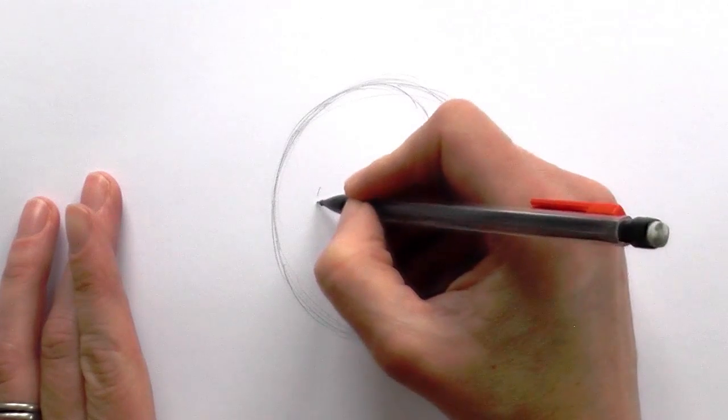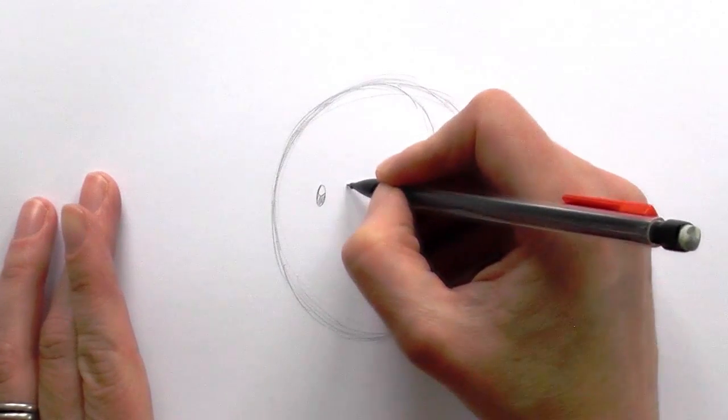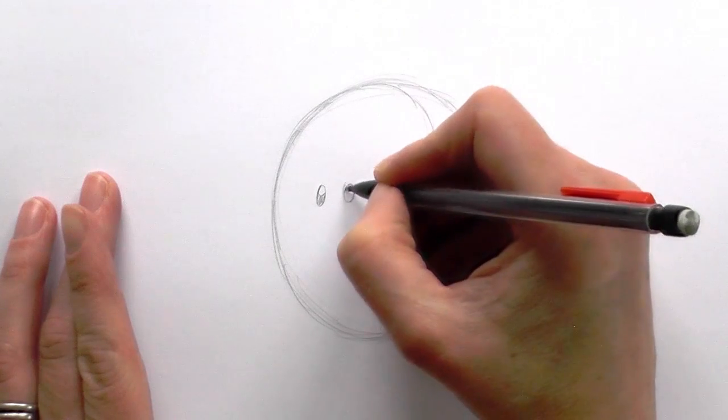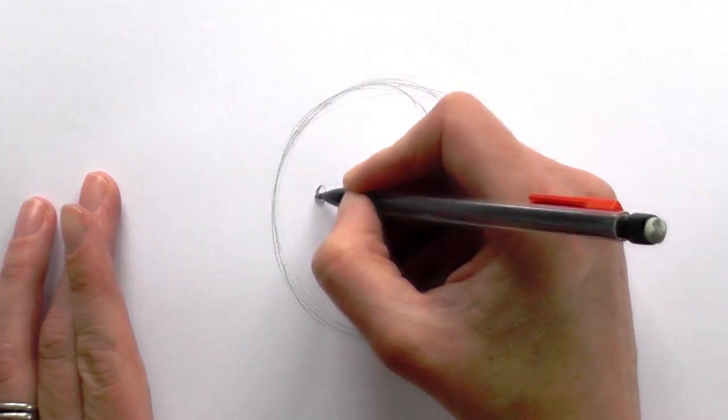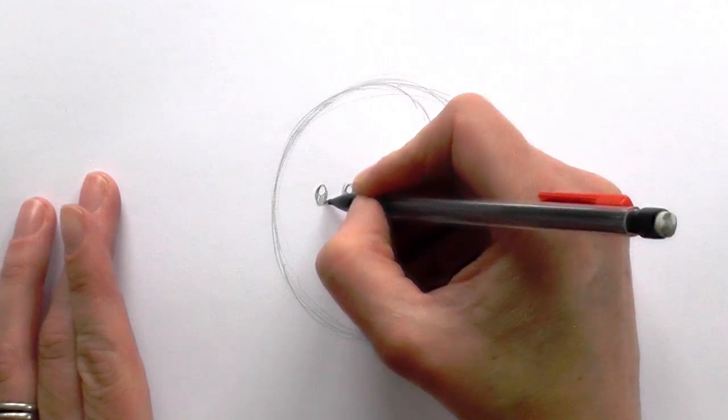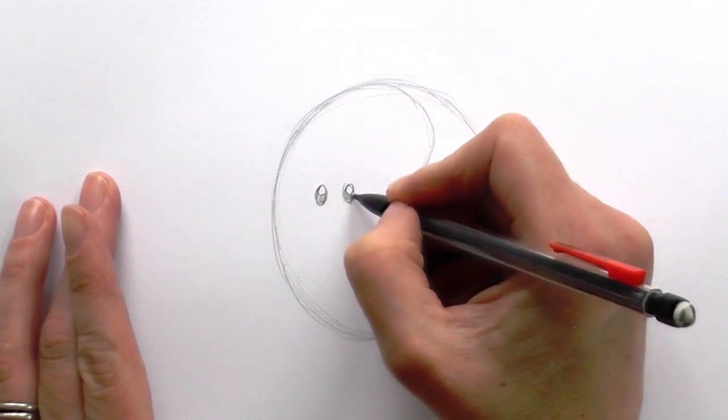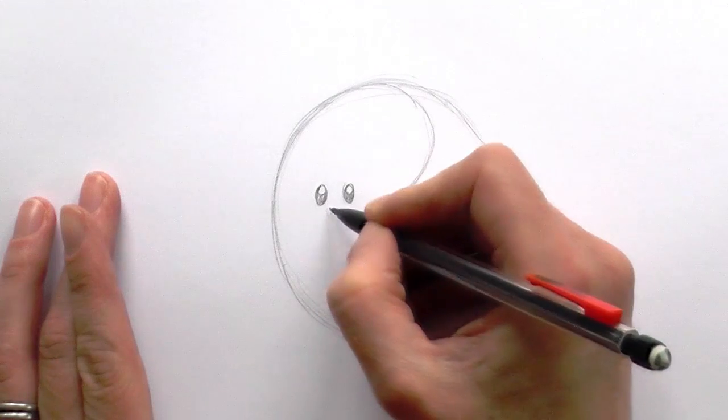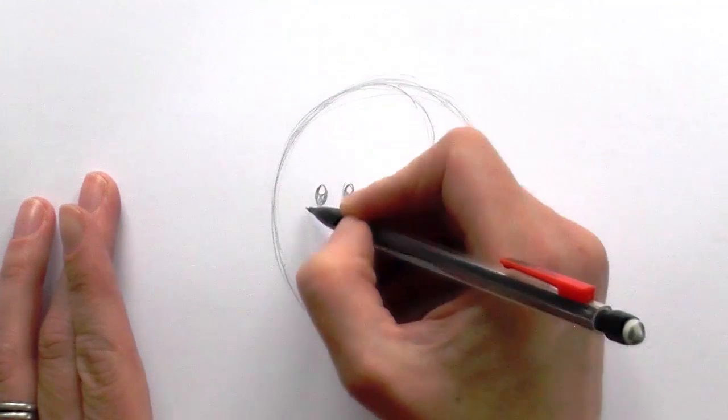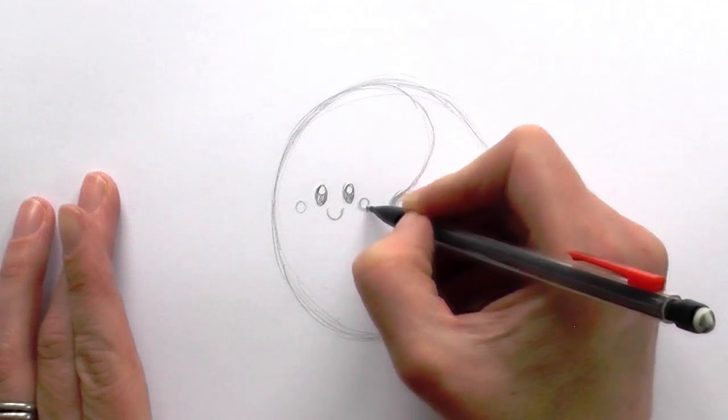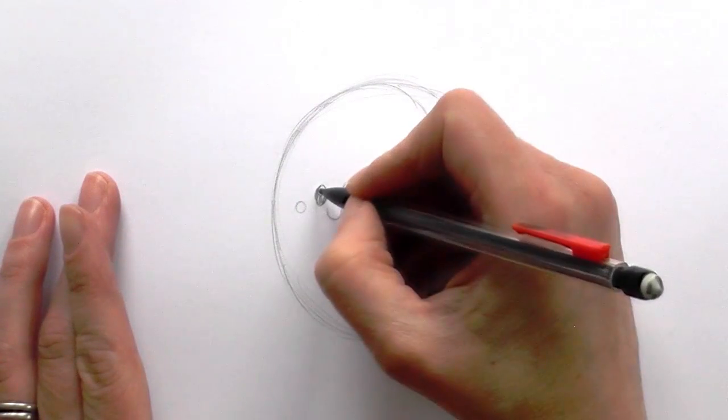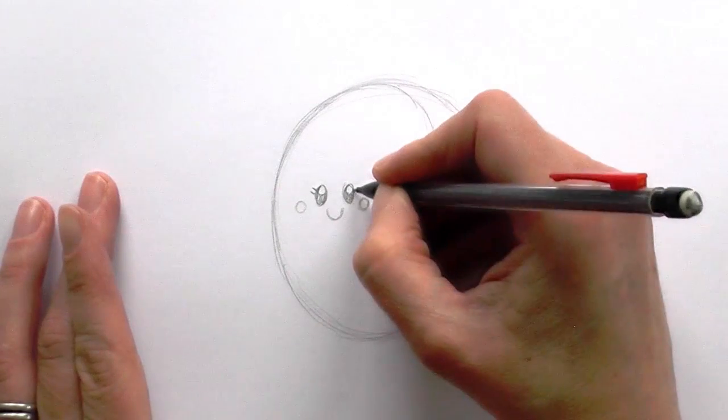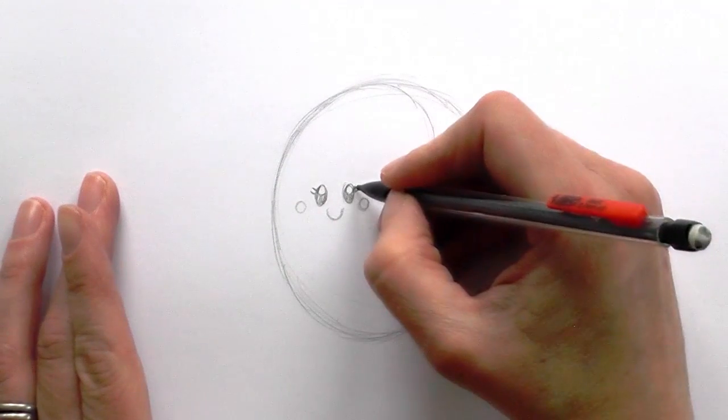Then we're going to do an oval with a circle for a highlight, and another oval with a circle for a highlight for eyes, just to give it a little bit of character. There, and then a little half circle for a smile, and then a little circle for a cheek, and a little circle for a cheek. And then one, two, and one, two lines for eyelashes.